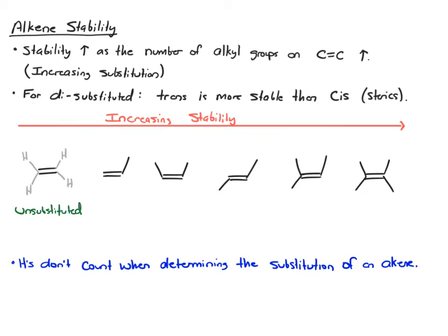And the second one, if we want, we can draw in the hydrogens. So three of the things attached are hydrogens, but the fourth thing right here is a carbon. That's one group, we call that monosubstituted.